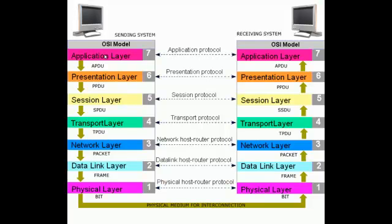That frame is sent to the physical layer, where it is converted into raw bits — 1s and 0s. These 1s and 0s are transmitted through a connection medium, which might be a copper wire, fiber optics, or a wireless connection.